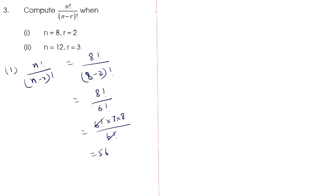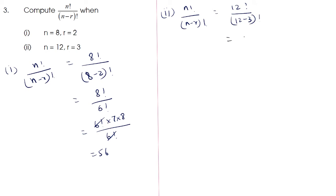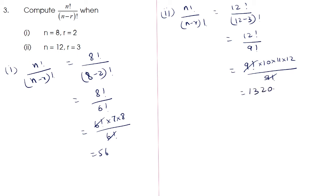Now the second subdivision: when n = 12 and r = 3, n! / (n - r)! = 12! / (12 - 3)! = 12! / 9!. We can write this as (9! × 10 × 11 × 12) / 9!. The 9 factorials cancel, so 10 × 11 × 12 = 1320.